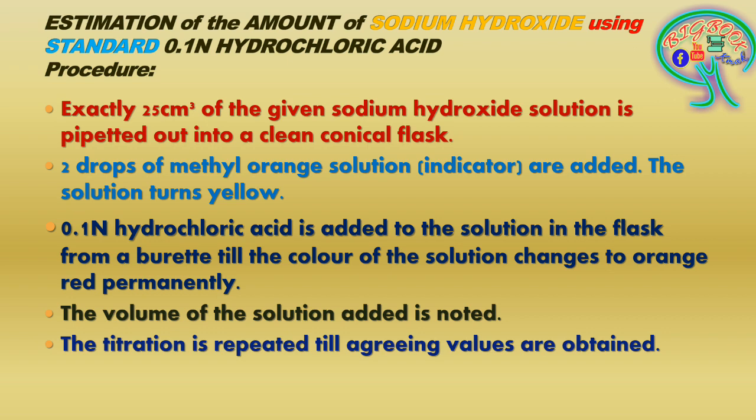Then 0.1 N hydrochloric acid is added to the solution in the flask from a burette. The burette is filled with 0.1 N hydrochloric acid and it is flowed into the flask, which already contains sodium hydroxide with two drops of methyl orange. When 0.1 N hydrochloric acid is added into the sodium hydroxide flask, the solution changes permanently from yellow to orange-red.